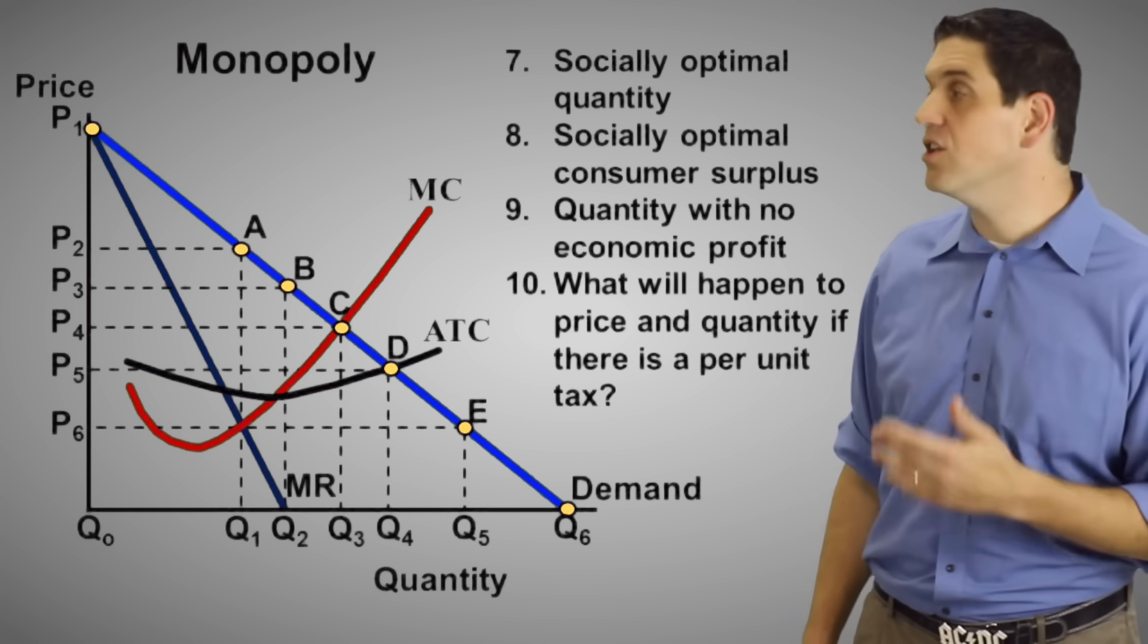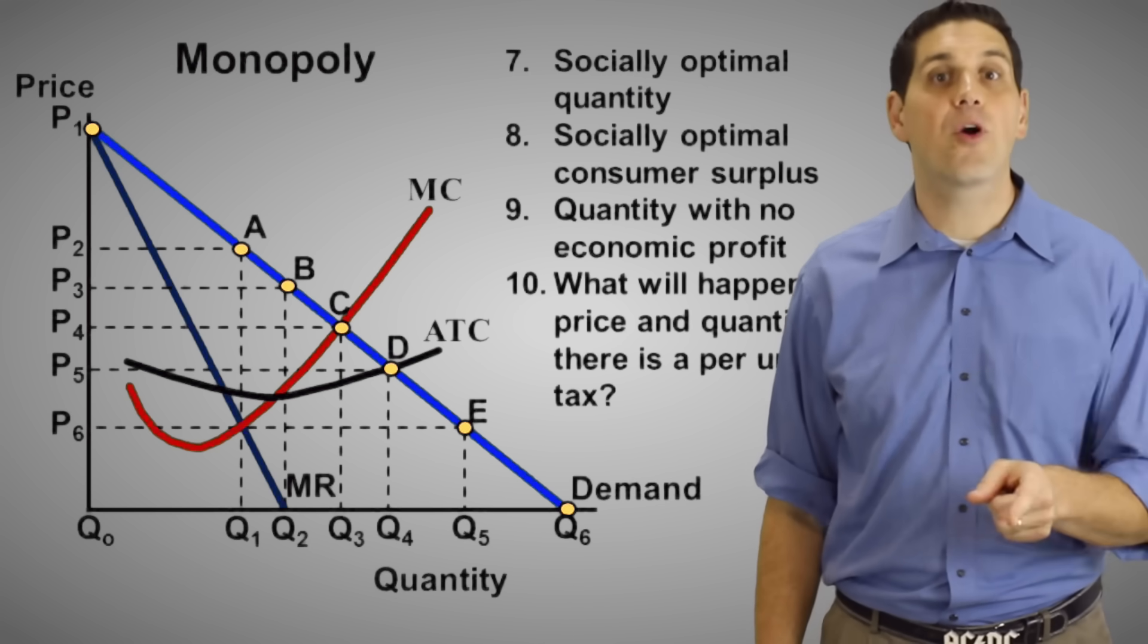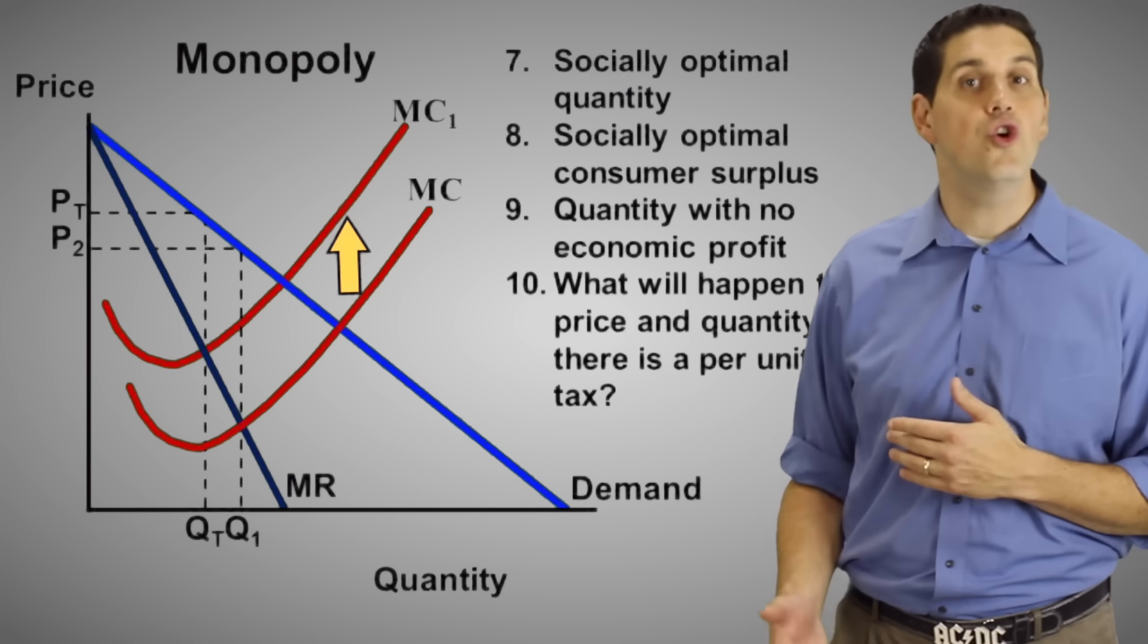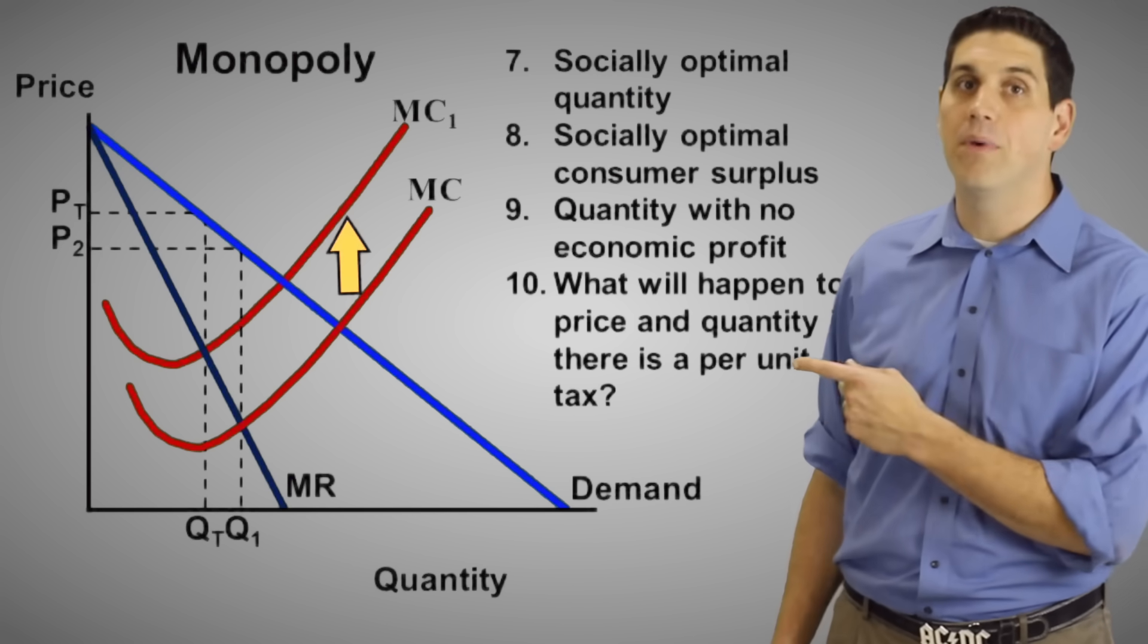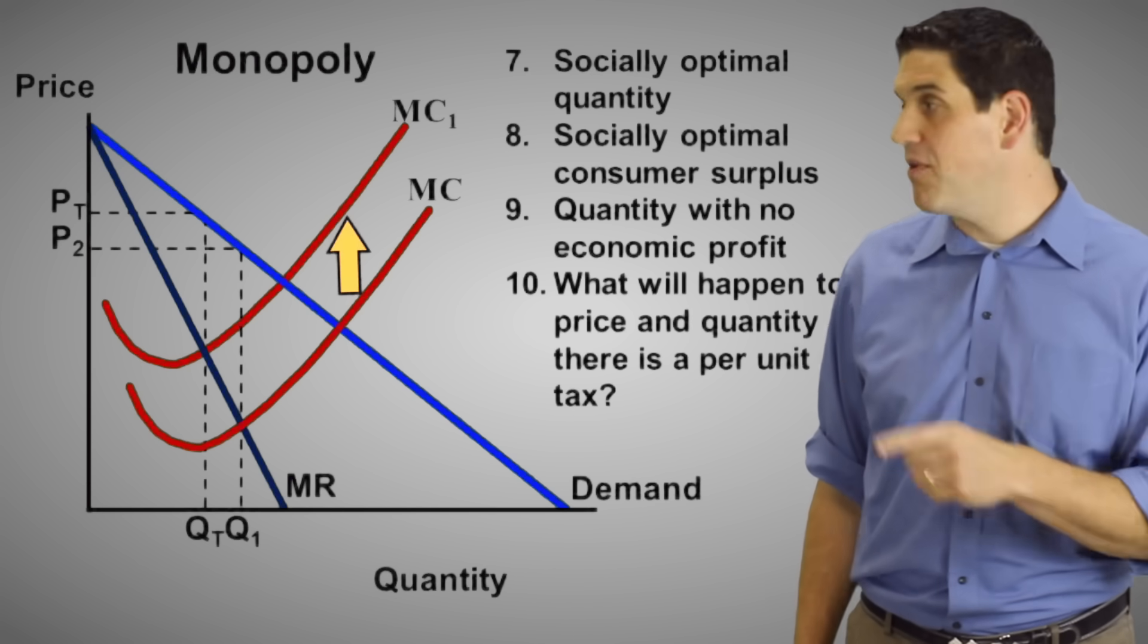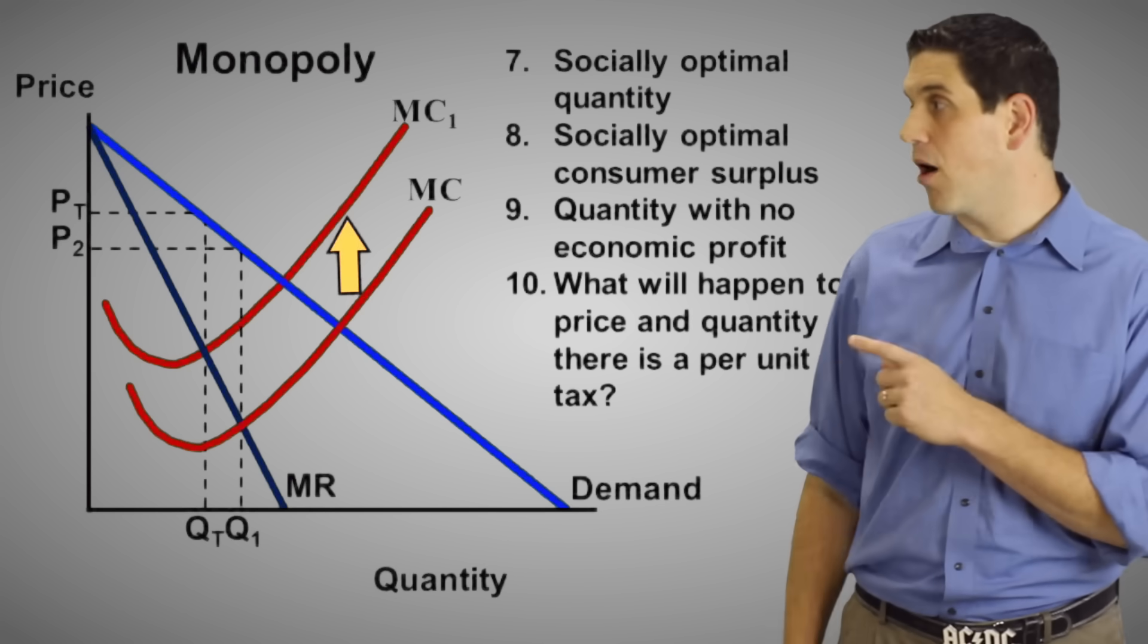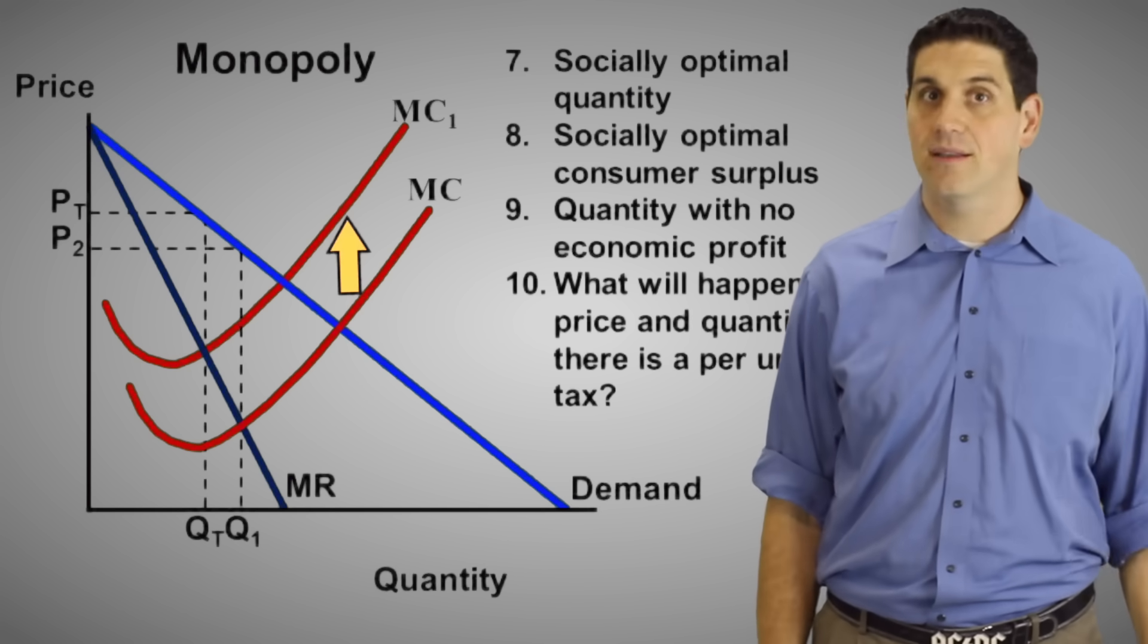What's going to happen to price and quantity if there's a per unit tax? Unlike a lump sum tax, a per unit tax will shift the marginal cost causing it to go up. So the new quantity where MR equals MC is there causing quantity to go down and price to go up. So the answer is price goes up, quantity goes down. Remember, it's not the same if that was a lump sum tax. A lump sum tax is a one-time tax that affects fixed costs, so marginal costs wouldn't change. Price and quantity would stay the same if it was a lump sum tax.